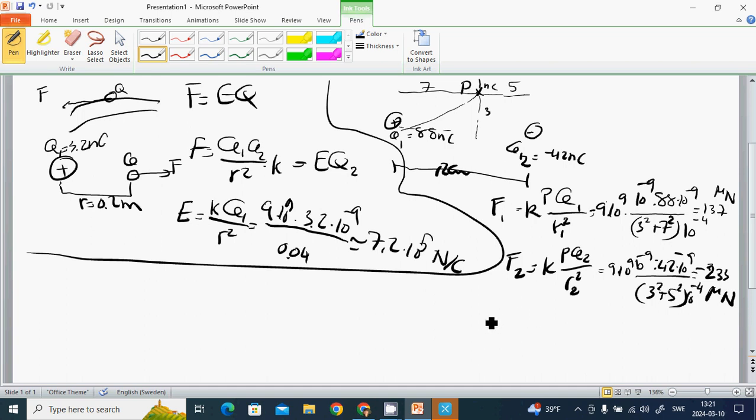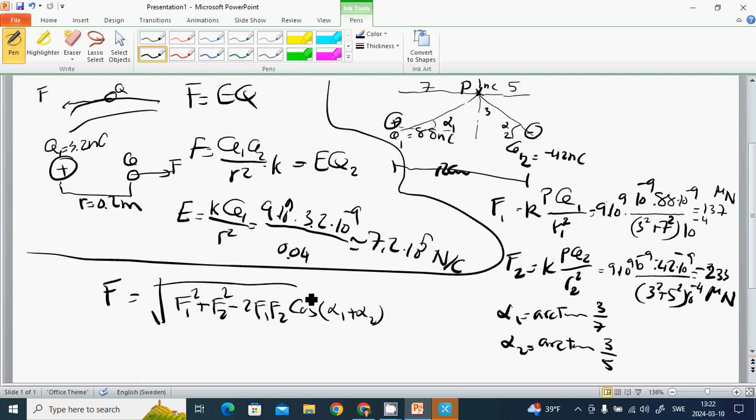For the angles, tangent alpha 1 equals 3 divided by 7, and tangent alpha 2 equals 3 divided by 5. The total force F equals the square root of F1 squared plus F2 squared minus 2 F1 F2 cosine of alpha 1 plus alpha 2. When we put in the values, we get 220 micronewtons.